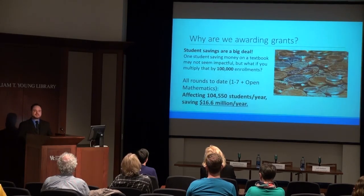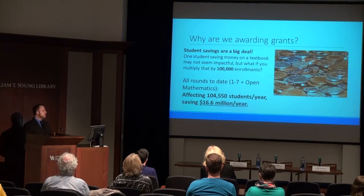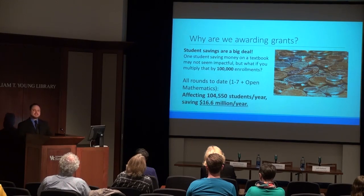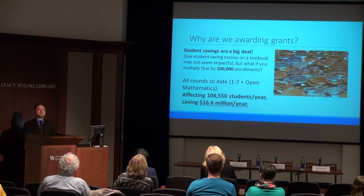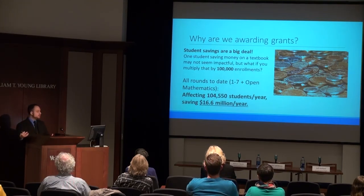Student savings are, of course, a big deal. If you're saving one student $200 on one course, that seems like small potatoes — though it's kind of nice for that one student. But if you multiply it by 100,000 enrollments, that gets really big. We are now affecting over 100,000 students per year through our textbook transformation grants program. That is based on faculty estimates of number of students per section, number of sections, number of sections per year — all calculated out, all faculty-reported.